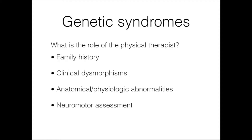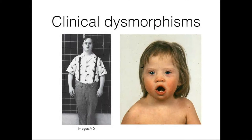When talking about clinical dysmorphisms, we are referring to the physical characteristics of people with genetic disorders. This picture shows two individuals with Down syndrome. You can probably look right away and start to think about what physical features look different from a typical genetic profile. People with Down syndrome often have smaller mouths, shorter stature and shorter limbs, wide-set eyes, a flat bridge of the nose, epicanthal folds, and oftentimes low-set ears.